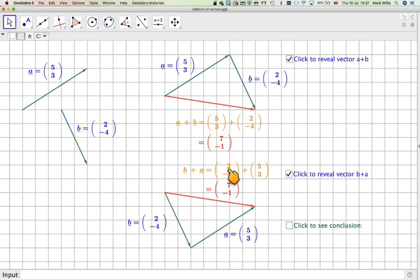And again, we can get the result by doing 2 plus 5, which is 7, minus 4 plus 3, which is minus 1. So the conclusion here is that vector A plus vector B is equal to vector B plus vector A.